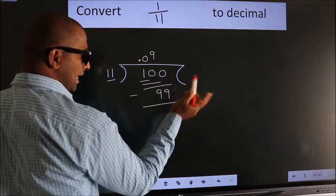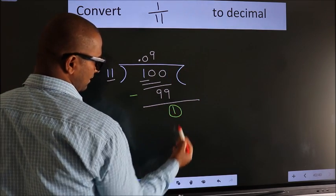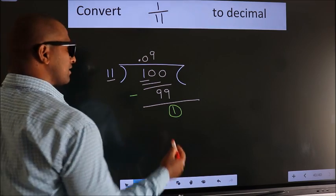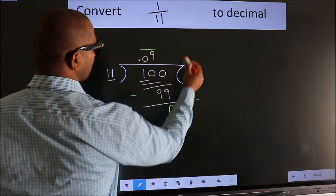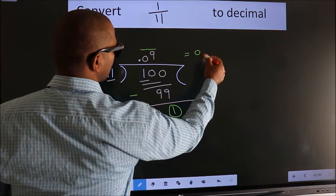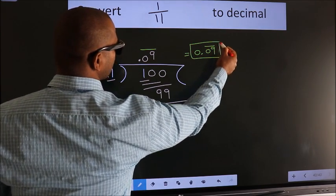Earlier we had 1, we got 1 again. That means we get a bar on these two numbers. So our answer is 0.09 with a bar on these two numbers.